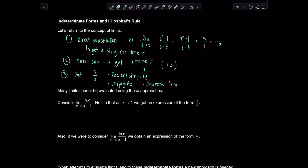Another indeterminate form you should have encountered is a rational expression with x approaching infinity, giving you infinity/infinity. In this case, what we do is divide everything in the expression by the highest degree term of the denominator. You may have also run into infinity minus infinity, where multiplying by the conjugate usually works.